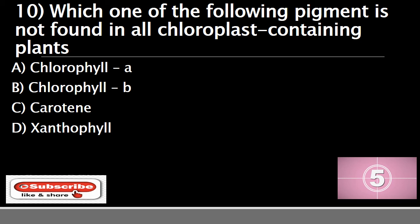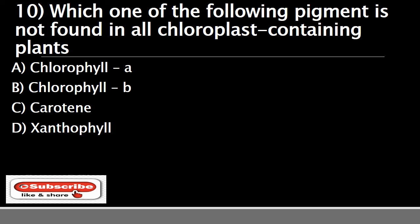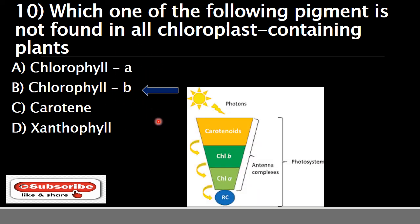Question number ten: which one of the following pigments is not found in all chloroplast-containing plants? Your options are A) chlorophyll a, B) chlorophyll b, C) carotene, or D) xanthophyll. The correct answer is B) chlorophyll b. All these pigments — chlorophyll a, chlorophyll b, carotene, and xanthophyll — are involved in photosynthesis. Chlorophyll a is the principal pigment and the other three are accessory pigments. However, in some chloroplast-containing plants chlorophyll b is absent; for example, red algae possess only chlorophyll a, not chlorophyll b.